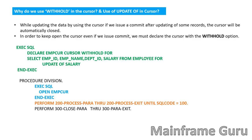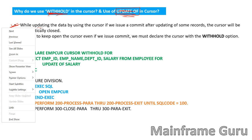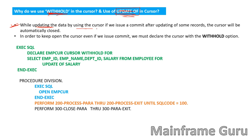The first question is: why do we use the WITH HOLD option in a cursor, and what is the use of FOR UPDATE OF in a cursor? We use the WITH HOLD option because while we are updating data using a cursor, if we issue a COMMIT after updating some records, the cursor will be automatically closed. In order to keep the cursor open even after a COMMIT, we must declare the cursor using the WITH HOLD option.